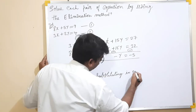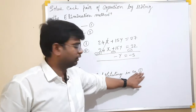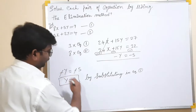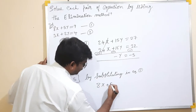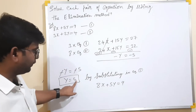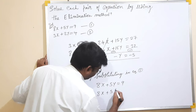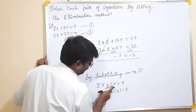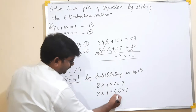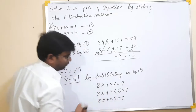By substituting back into equation 1, we get 8x plus 5y equals 9. We now substitute the y value: y equals 5. So we have 8x plus 5 into 5 equals 9, which gives 8x plus 25 equals 9.